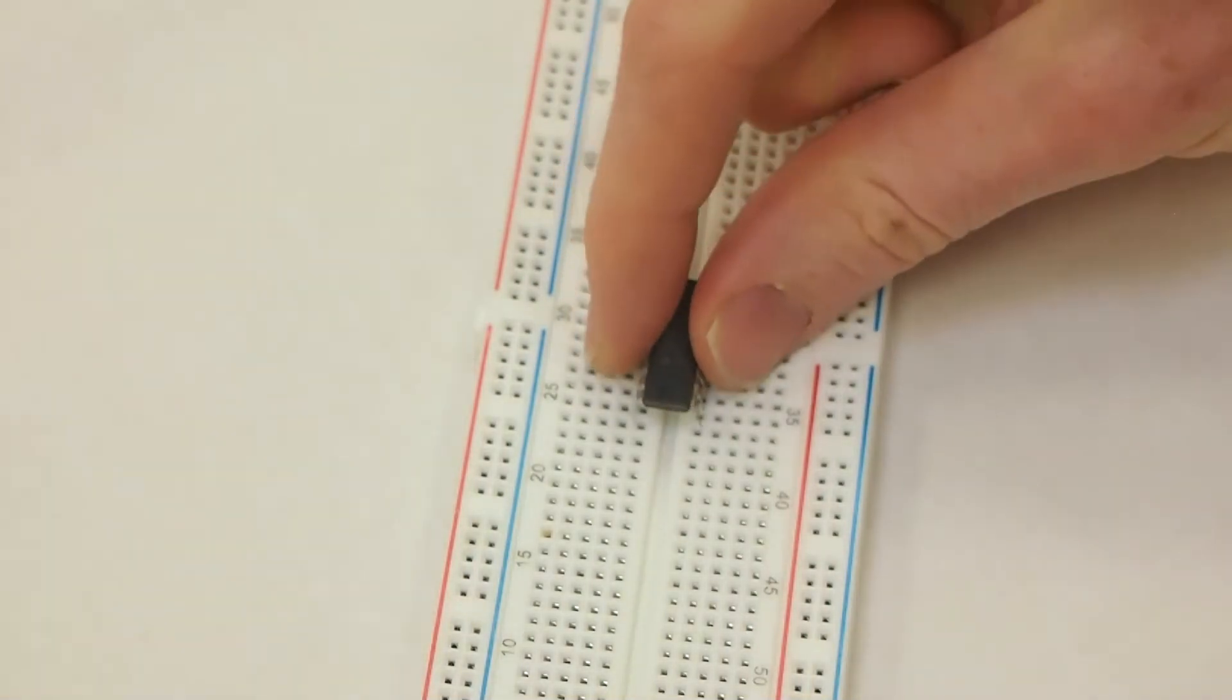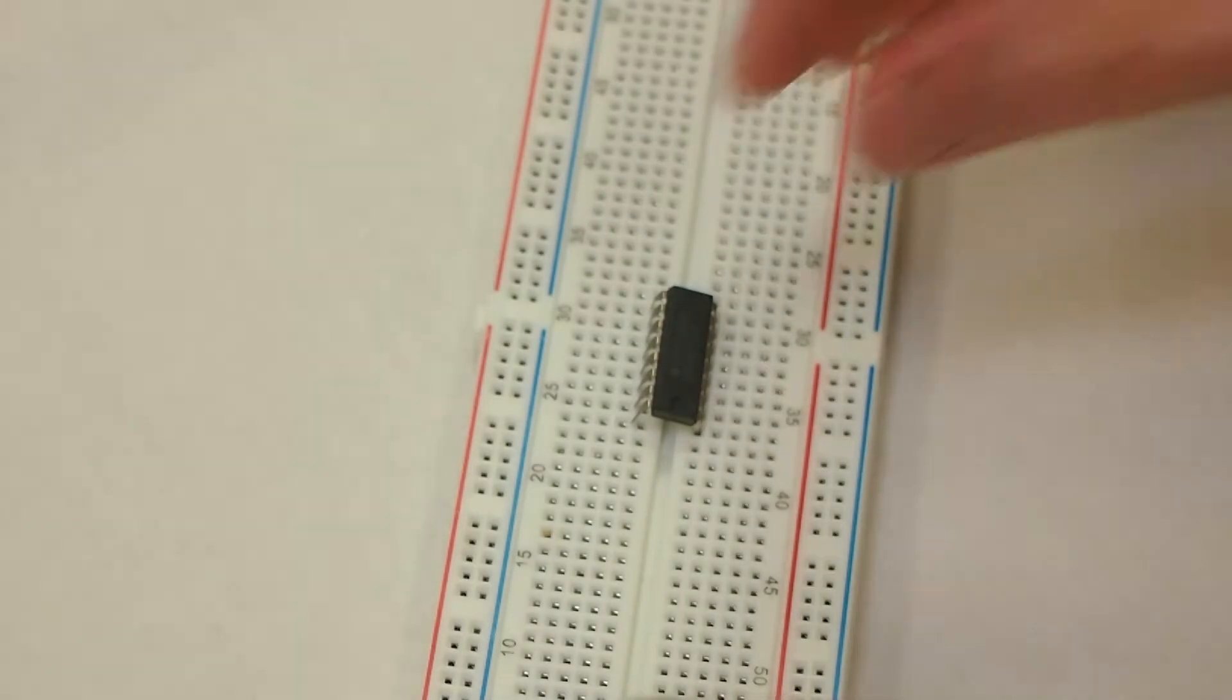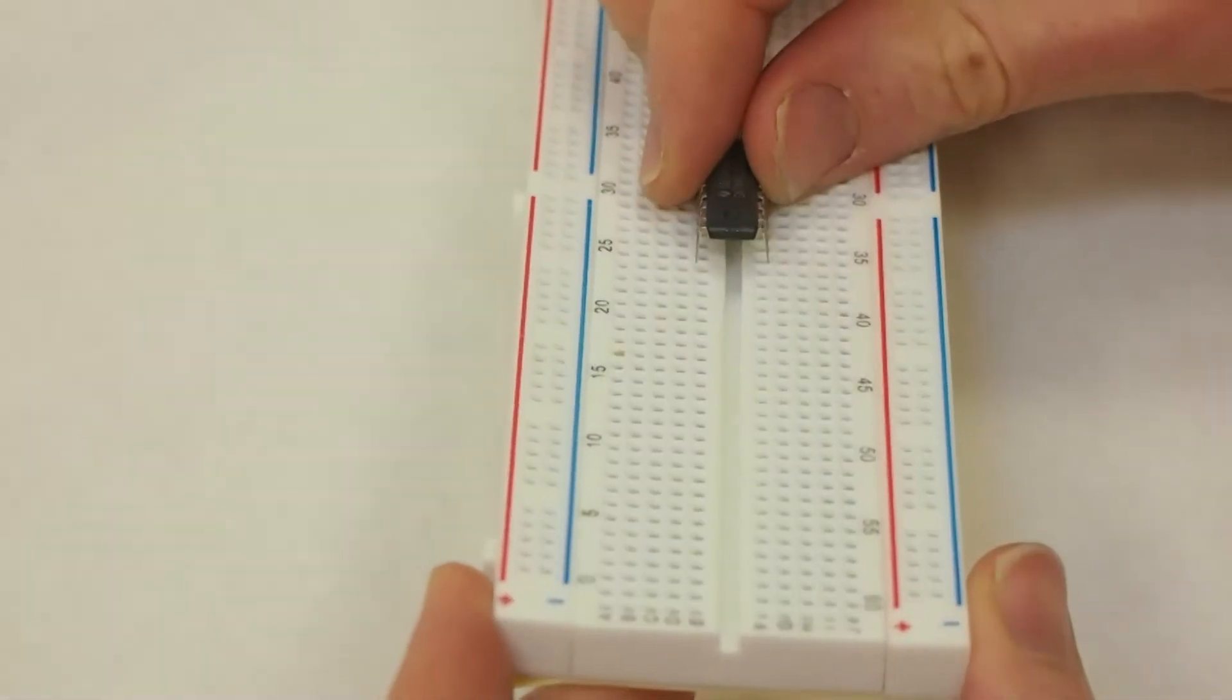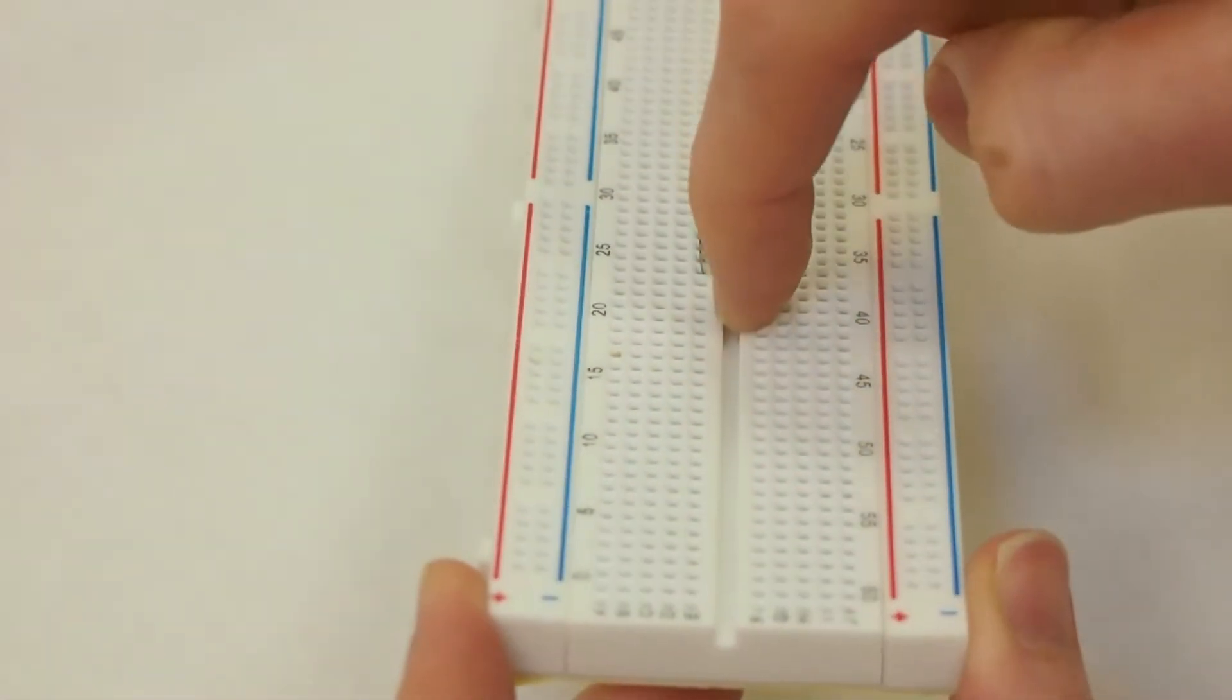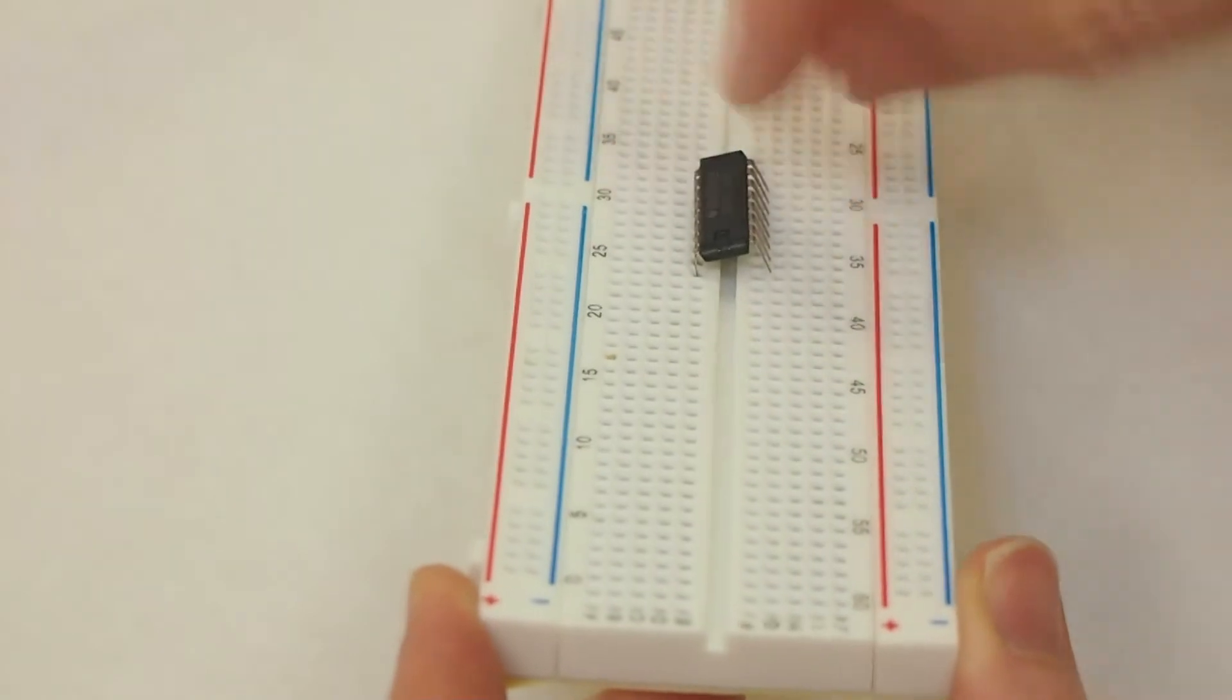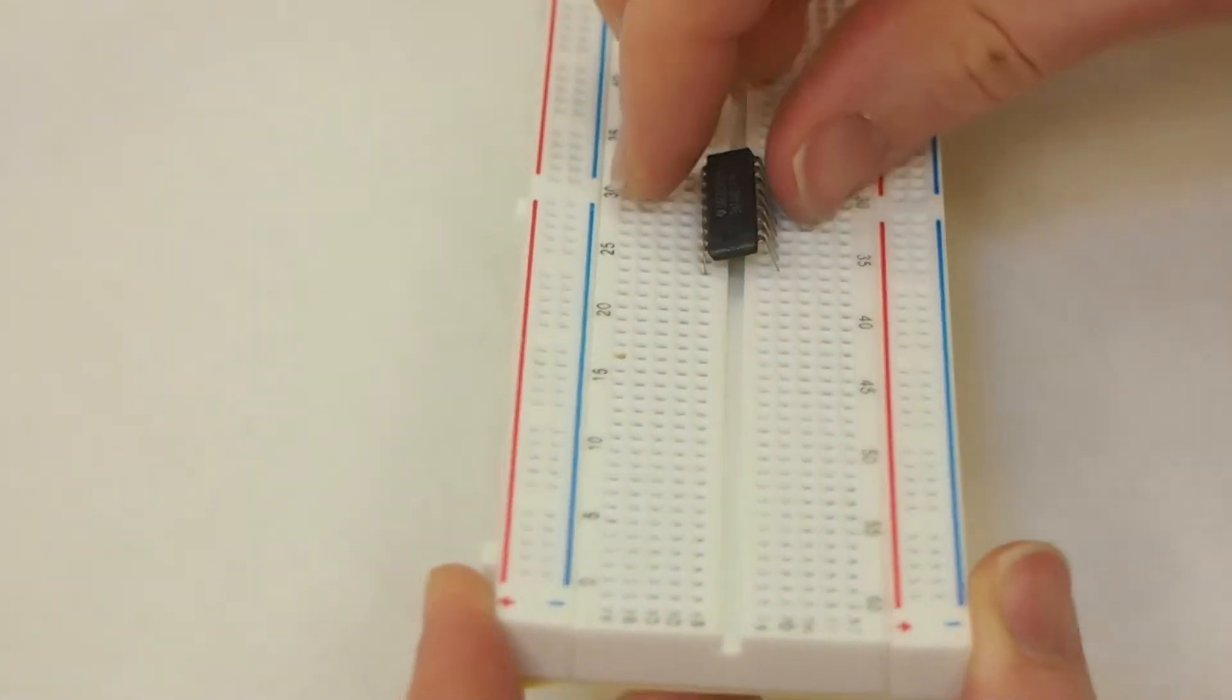Getting your chips into the breadboard for the first time can be a little bit tricky. Placed right, they should straddle this middle divider on the breadboard and they should be in the first row adjacent to that middle divider.